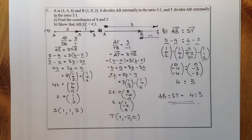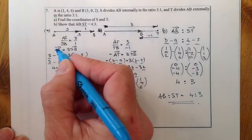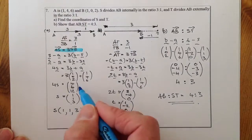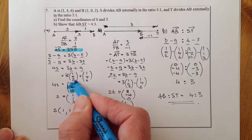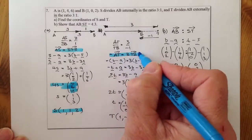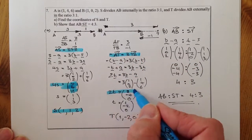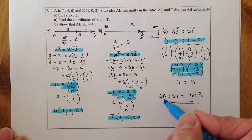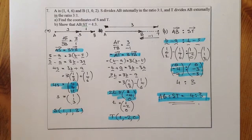Looking at the marking for this question: one mark for setting up the relationship correctly, one mark for getting 4S equal to the expression, one mark for the coordinate S, marks for setting up and solving T, then working out the ratio and the final statement. This question is worth nine marks in total.